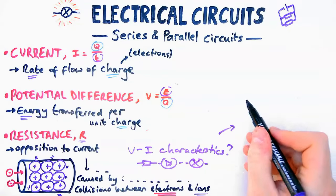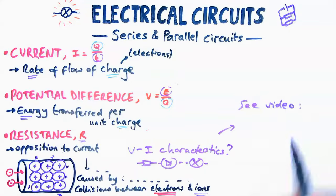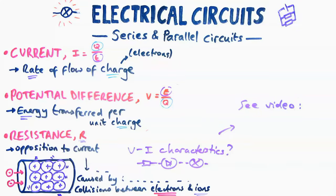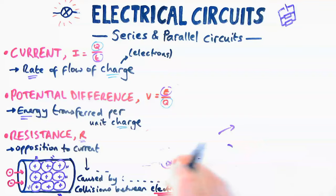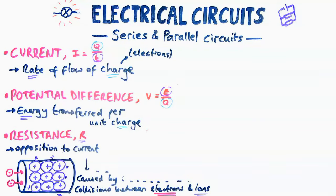If you want to know a bit more about how current and voltage varies depending on the component, so for example a bulb, a diode or resistor, you should watch this video here which is about the required practical called current voltage characteristics.